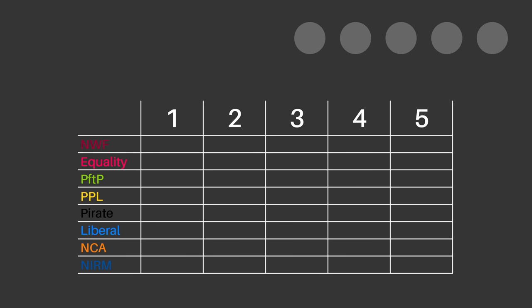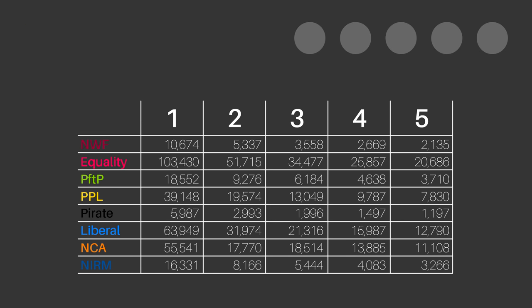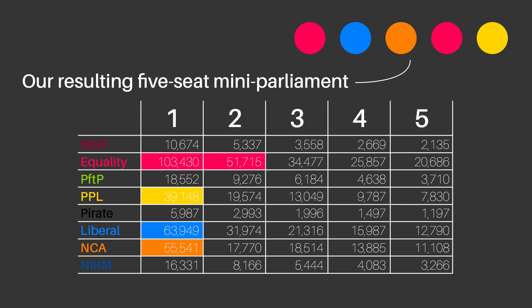Our table needs to have five columns, one for each seat, and one row for every party. Now we fill in the numbers, divide them by the quotient for the current seat number, leaving us with a fully filled-in table. Now we remove the biggest value from the table and apportion that party a seat. We repeat the process for the second seat, and a third, and a fourth, and a fifth, with our resulting parliament looking like this.